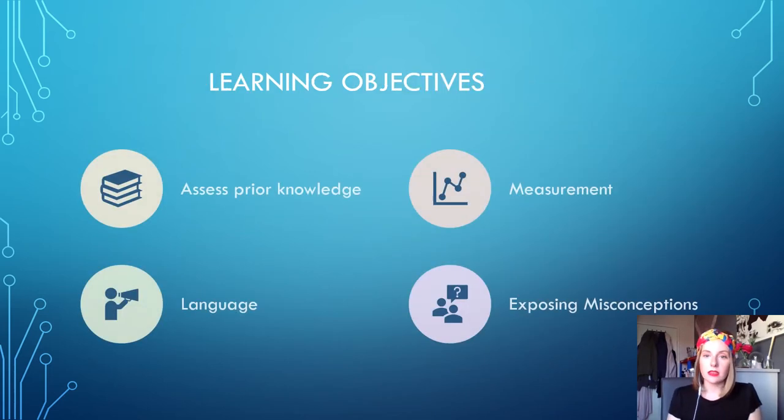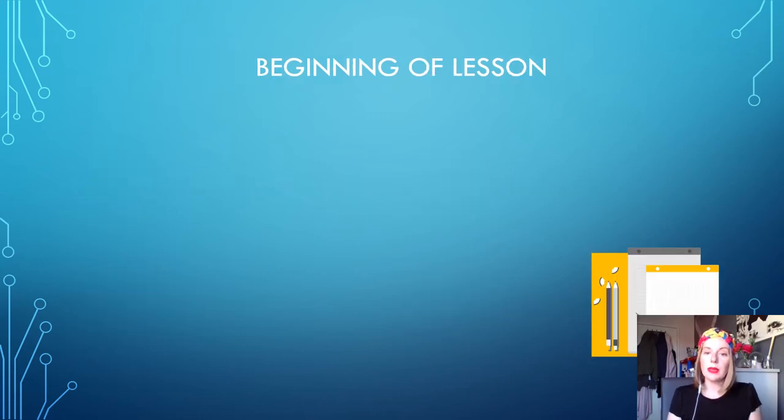The objective of this lesson would be to assess the students' knowledge and understanding of two basic probability concepts they would have covered within their junior certificate: measurement and the language used around events. The second objective is to expose any preconceived ideas they may have around probability-based statements, in particular the concept of independent events and mutually exclusive events. I would begin the lesson by informing the students that we will be covering probability today, that probability falls within strand 1 of their syllabus along with statistics, and we will be recapping on some elements they would have covered in their junior certificate before exploring the topic in more depth.